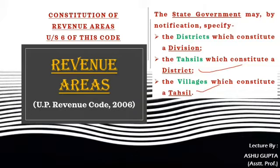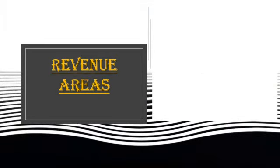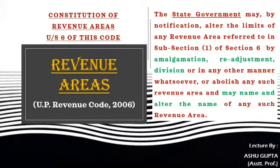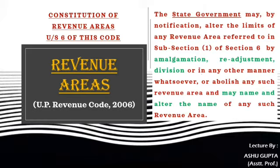Under Section 6 of this code, the state government may also alter the limits of any revenue area referred to in subsection 1 of Section 6 by amalgamation, readjustment, or division, or in any other manner whatsoever, or abolish any such revenue area, and may name and alter the name of any such revenue area. In summary, the state government has the power to amalgamate or readjust any division or revenue area, or alter its name.